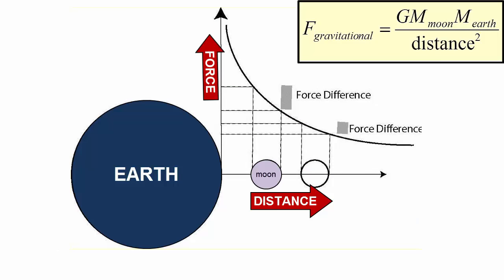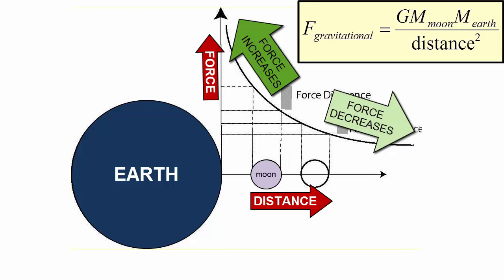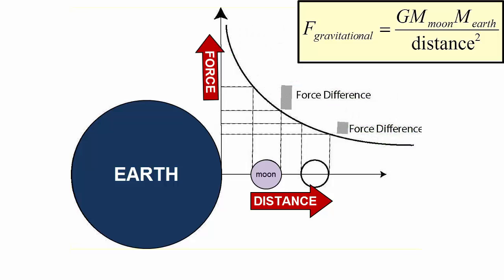This graph shows how force of gravity increases with proximity and decreases with distance. The Sun is so massive its force is much greater than the Moon's, even though it's further away. But again, it's the difference in force that creates tides, so let's look at what happens when you move the Moon or any object further away.